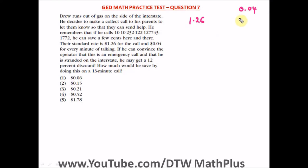We have to first of all find the total amount he's going to use, then we'll now get the discounted amount. So how much will he save by doing this on a 13-minute call? First of all, to get the total amount he's going to spend on the call.